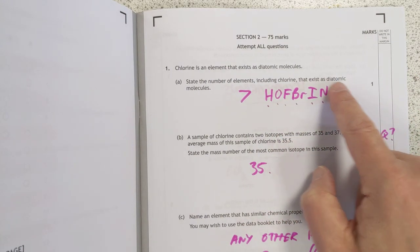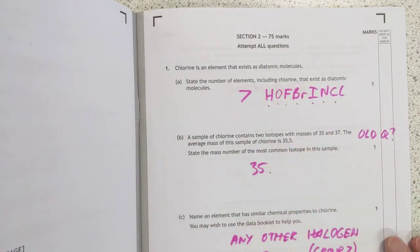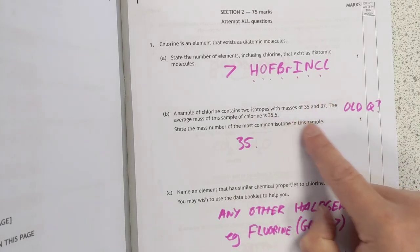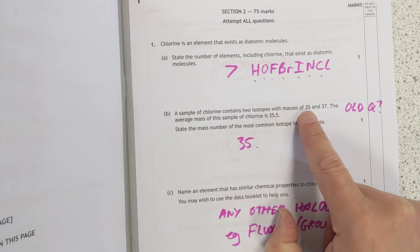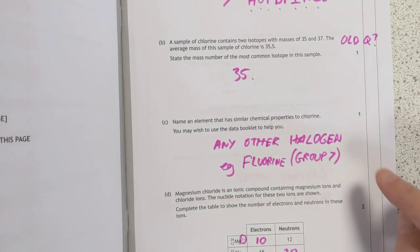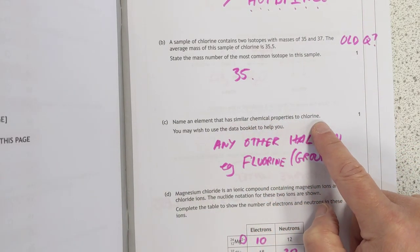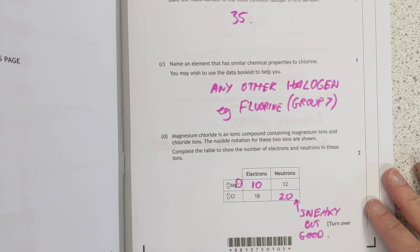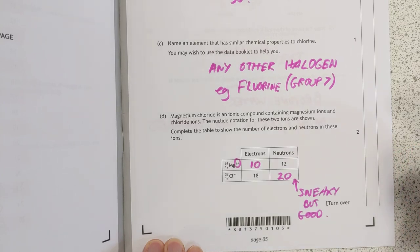I'll rip through the answers very quickly, except problem-solvings, probably. So let's start. Hoff-Brinkles, as I teach them, the diatomic elements, there are seven of them, however you've learned that. So the answer there is seven. This looks familiar to me. Is this an old question? If the average is 35 and you've got 35 and 37, then that is closer. That is the most common one. Similar chemical properties to chlorine. Any other halogen. I've gone with fluorine. Just because it's bonkers. It's the most interesting, most violent one in the group.